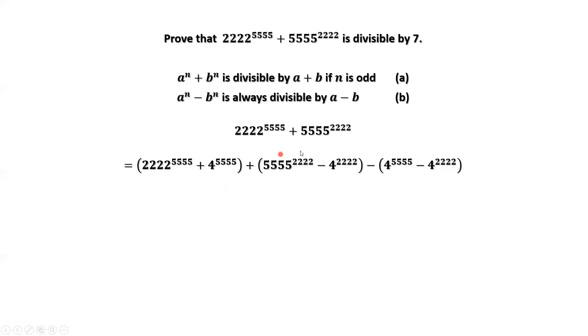Let's check this second group. We apply the second result, result b. This group is divisible by a minus b. Here, a is 5555, b is 4. 5555 minus 4 is 5551, which is 7 times 793. Therefore, this second group is divisible by 7.